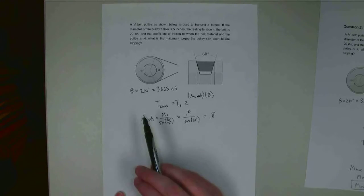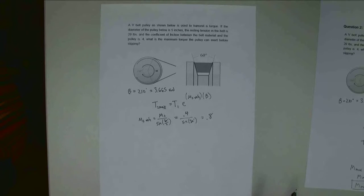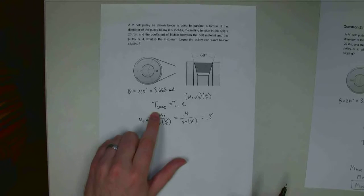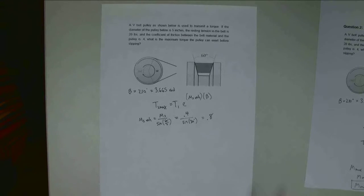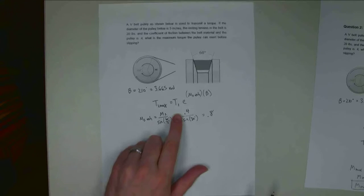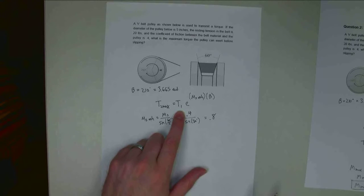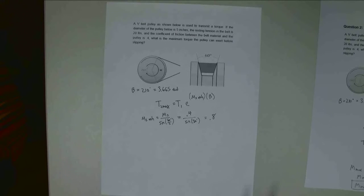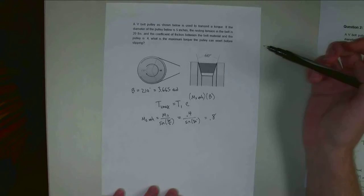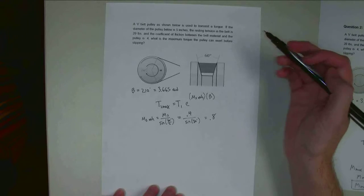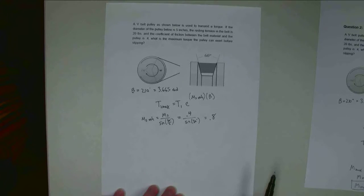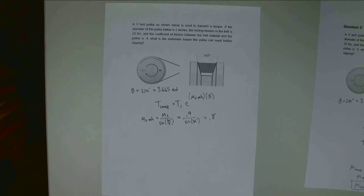All right, so now I need to start plugging other numbers in. So T2 max is the tension on one end just before it starts to slip. T1 is going to be the other tension in the belt. And that is going to be the smaller of the two tensions, which is always going to be equal to the resting tension if I measure the tension before I start to wind this thing up.